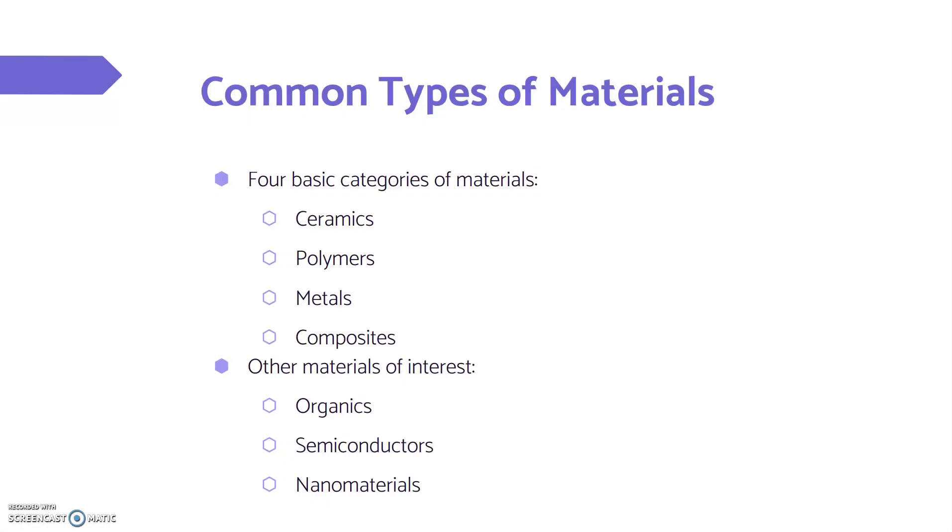What kind of materials are out there? There are four basic categories. The four main ones are ceramics, polymers, metals, and composites. The other materials are organics, semiconductors, and nanomaterials that are a little less common.